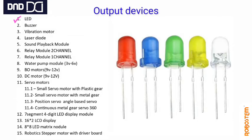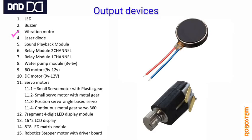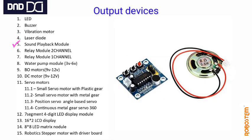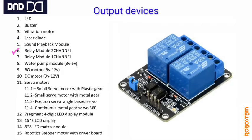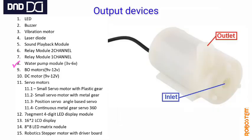Now coming to the output devices — we have many. First, there are LEDs in many different colors. We also have buzzers. This is a vibration motor — the small pancake model that is there in your mobile. Laser diode is used in most laser toys. Sound playback module — you can record your own voice and play it back. This is a relay — two-channel and one-channel relay. It is an interfacing device between high voltage and low voltage.